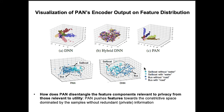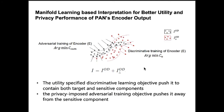We visualize PAN's encoder output on the feature distribution to seek more insight into how PAN disentangles features relevant to privacy from those relevant to utility. We also present a manifold learning-based interpretation.